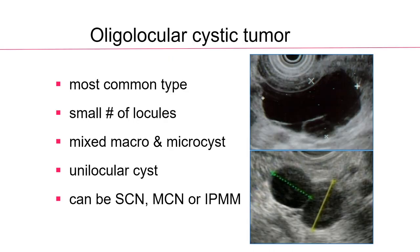If the lesion shows typical features of honeycomb appearance or IPMN showing clear communication with MPD, it is possible to diagnose serous cystadenoma or IPMN. However, the majority of cysts nowadays falls into this category: oligolocular cystic tumor showing a small number of locules — usually less than five or six — composed of macro or micro cysts, sometimes unilocular cysts. These cysts can be either serous cystic neoplasm, mucinous cystic neoplasm, or sometimes IPMN. So the differential diagnosis is quite troublesome.